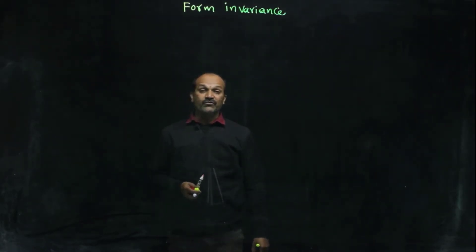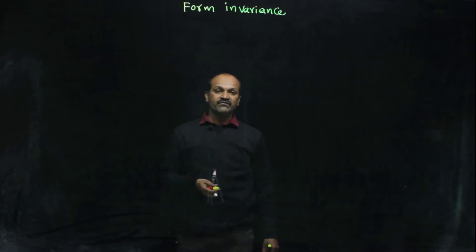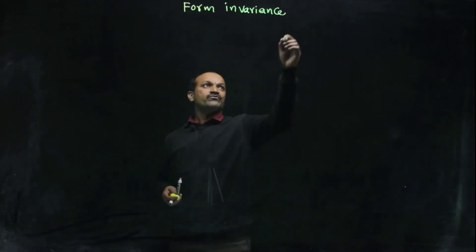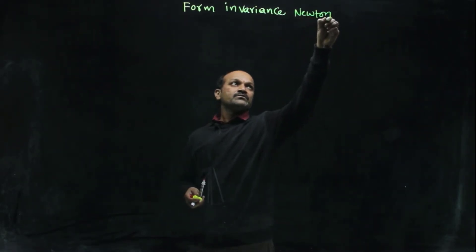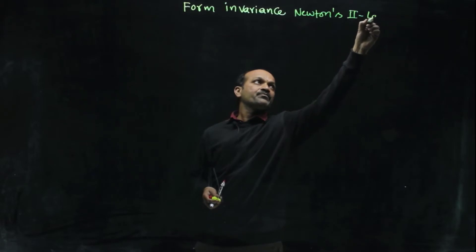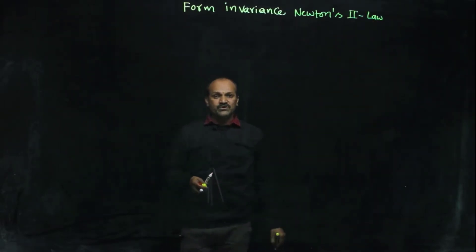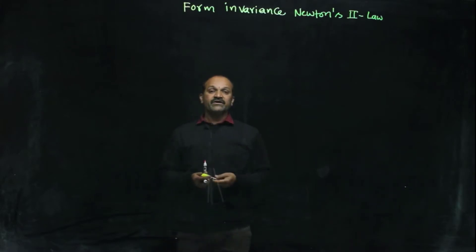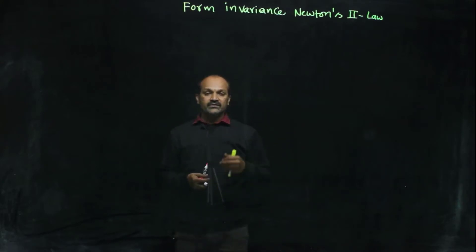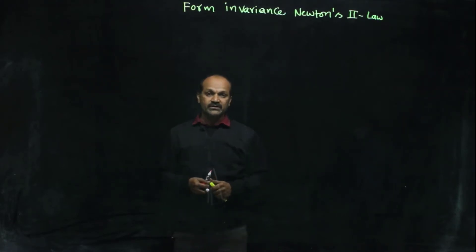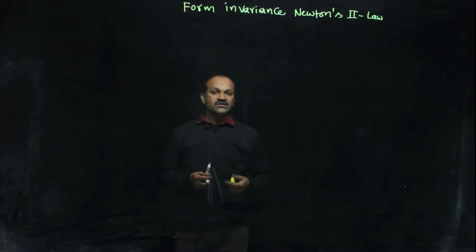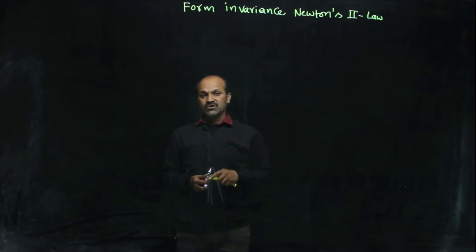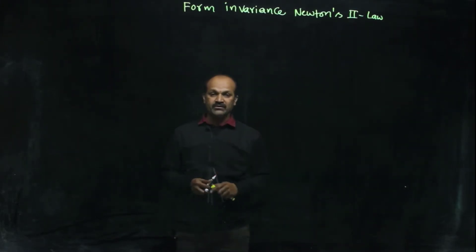Today we will discuss form invariance, also called Galilean invariance — the form invariance of Newton's second law. Invariance means which does not vary. If you calculate something using Newton's second law, the value must be the same irrespective of the frame of reference. The frame of reference must be an inertial frame of reference — that is, the frame in which Newton's laws are obeyed and applicable.